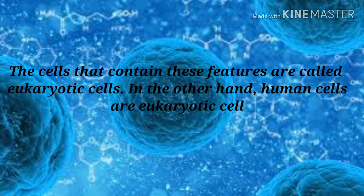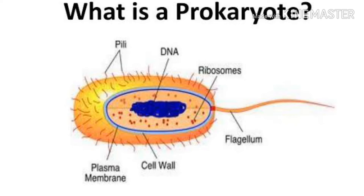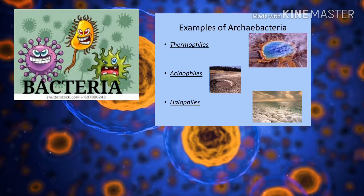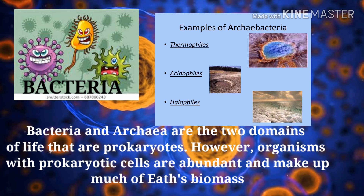Cells that contain these features are called eukaryotic cells. Human cells are eukaryotic cells. Next is prokaryotes, or prokaryotic cells. Prokaryotes are unicellular organisms that consist of a single prokaryotic cell. Prokaryotic cells are simple cells that do not have a true nucleus or other cell organelles. The bacteria and the archaea are the two domains of life that are prokaryotes.